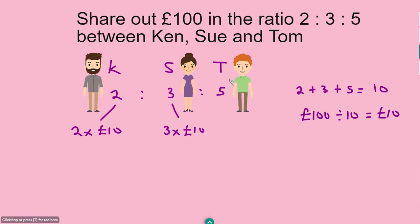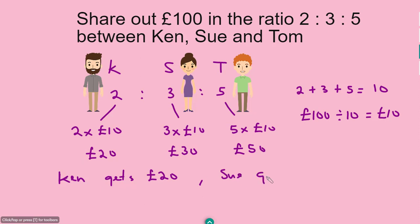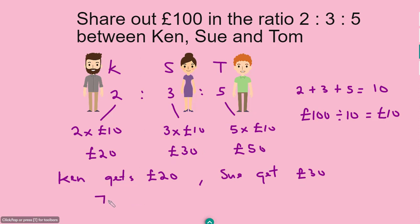That means Ken gets two lots of 10 pounds, Sue gets three lots of 10 pounds, and Tom gets five lots of 10 pounds. Working out each: Ken gets 2 times 10 equals 20 pounds, Sue gets 3 times 10 equals 30 pounds, and Tom gets 5 times 10 equals 50 pounds. To summarize: Ken gets 20 pounds, Sue gets 30 pounds, and Tom gets 50 pounds.